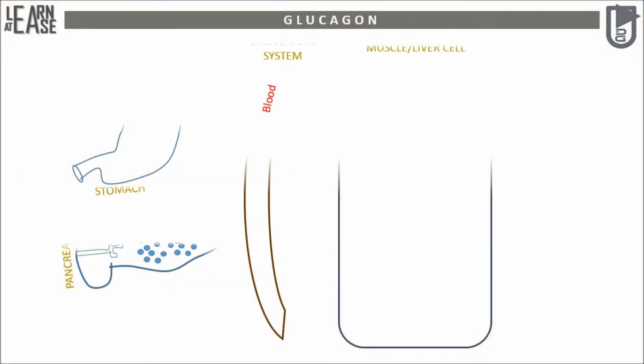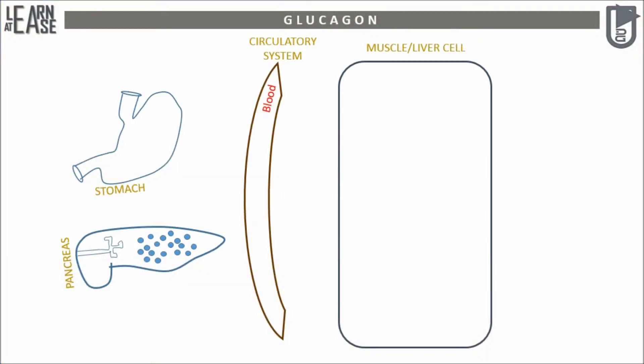Essential organs of the body required to understand the production of glucagon and its function include: stomach, pancreas, circulatory system, muscle, liver, and adipose tissue.